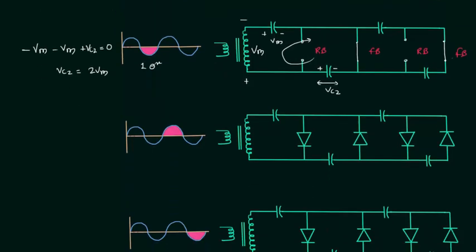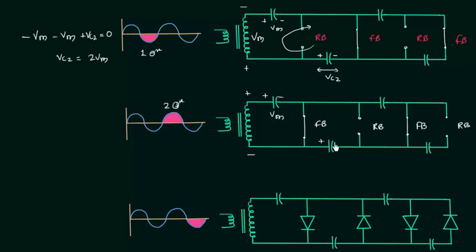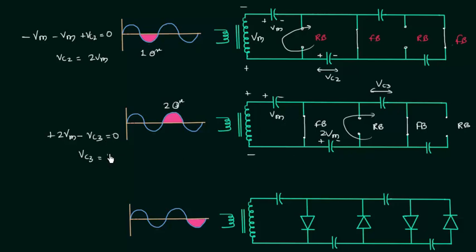Now we analyze the circuit for the second positive half cycle. The polarity of input is plus-minus again, so D1 and D3 are forward biased and D2 and D4 are reverse biased. Capacitor C1 is charged with Vm and capacitor C2 is charged with 2Vm. Applying Kirchhoff's voltage law: 2Vm minus Vc3 equals 0, so Vc3 is equal to twice of Vm.